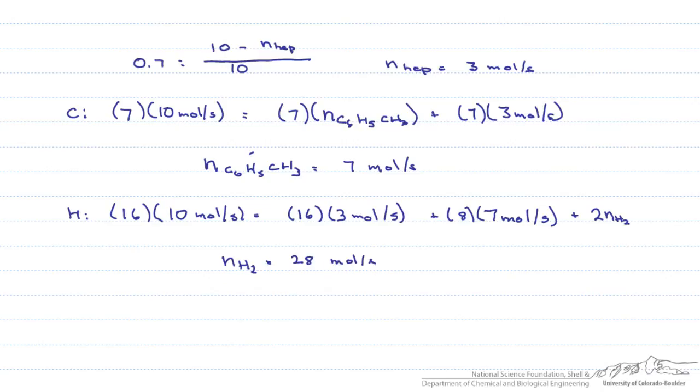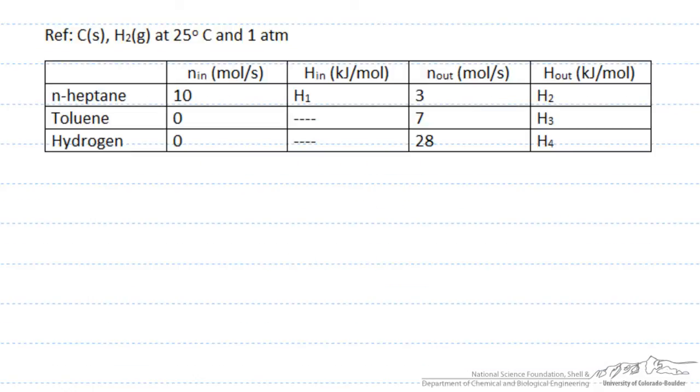Now that we have done our material balances we can put together an enthalpy table. Note that our references are elemental species at 1 atmosphere and 25 degrees C. We choose that reference because the heats of formation which we need to solve this problem are measured there.